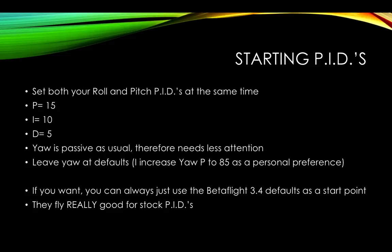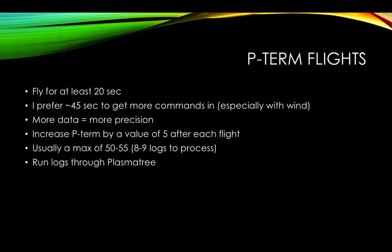You can just use the Betaflight 3.4 defaults if you want instead of 15, 10, and 5 for roll and pitch. The Betaflight defaults are really good and you can just tune from there essentially. After you get your PID set up, if you do decide to go with the PlasmaTree route and go 15, 10, and 5 for pitch and roll, what you're gonna wanna do is you're gonna wanna go outside, fly for about 20 seconds and then land. I usually just do them line of sight.